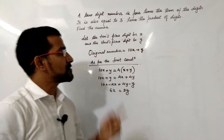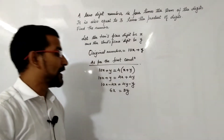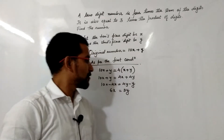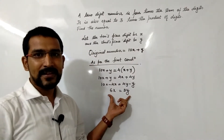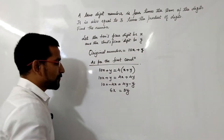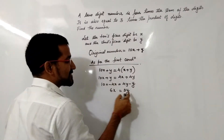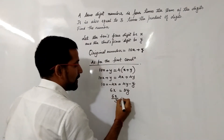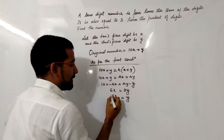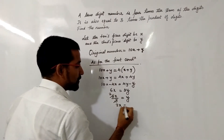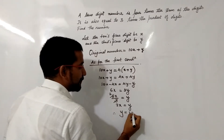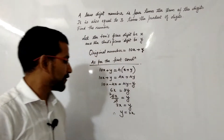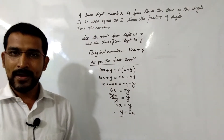Now since we need to solve by quadratic equation using one variable, we make y the subject. From 6x = 3y, dividing both sides by 3 gives y = 2x. So in the coming equations we can substitute y = 2x.